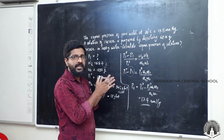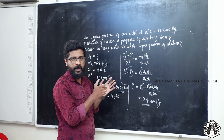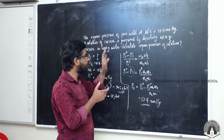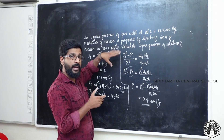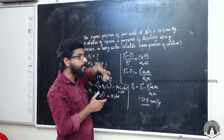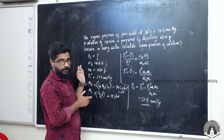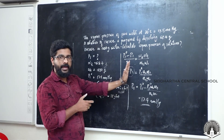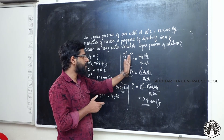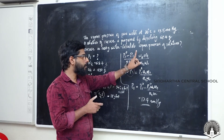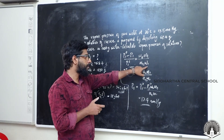The procedure is clear. First, from the question we analyze all the terms, then we apply the expression: (P1⁰ − P1) / P1⁰ = (W2 × M1) / (M2 × W1).